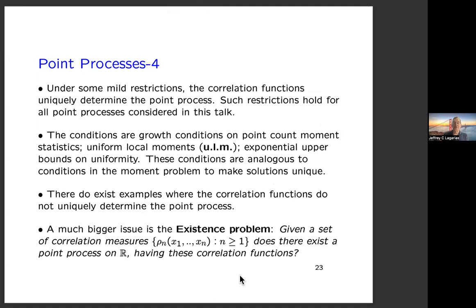Just as under some restrictions the correlation functions uniquely determine the point process — that's the standard state of affairs — in the moment problem for measures it's known there are bad examples where measures are not uniquely determined by their moments. If the moments don't grow too fast, this doesn't happen. In the papers we impose assumptions ensuring uniqueness; all point processes we discuss satisfy those conditions, so correlation functions determine everything.